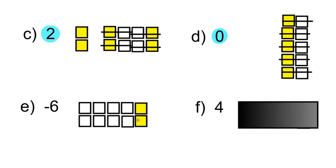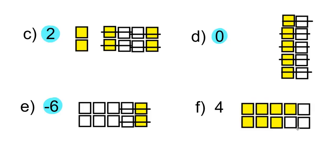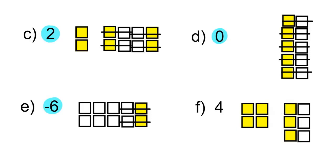Cancel out the zero pairs, and you're left with negative 6. For F, positive 4. This is represented by 7 positive tiles and 3 negative tiles. Cancel the zero pairs, and you're left with positive 4.